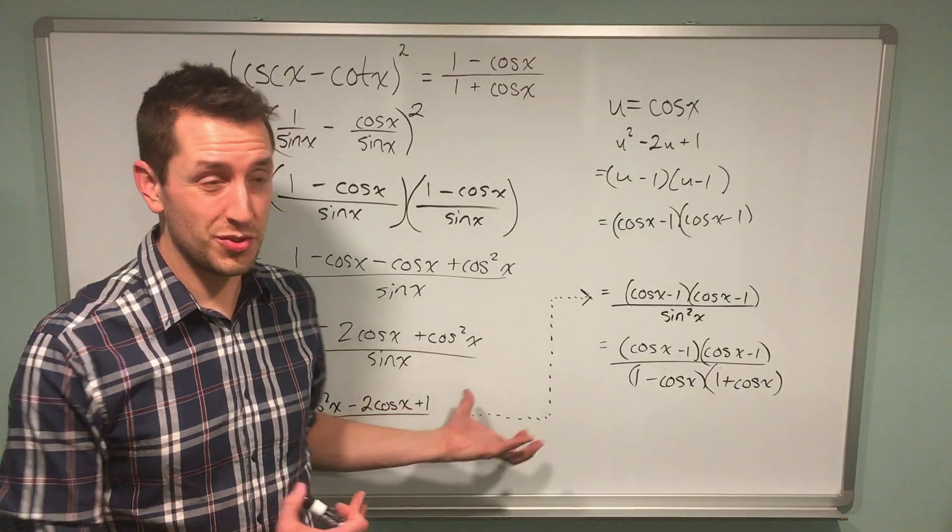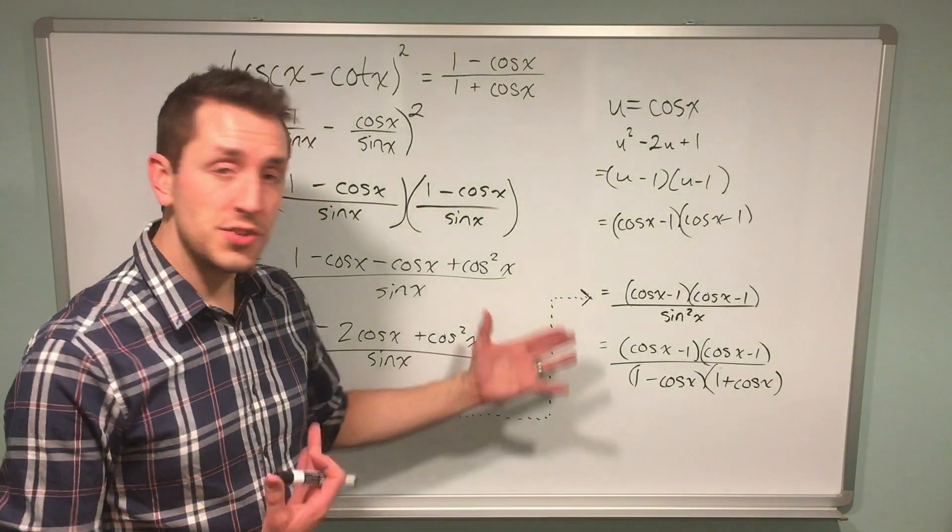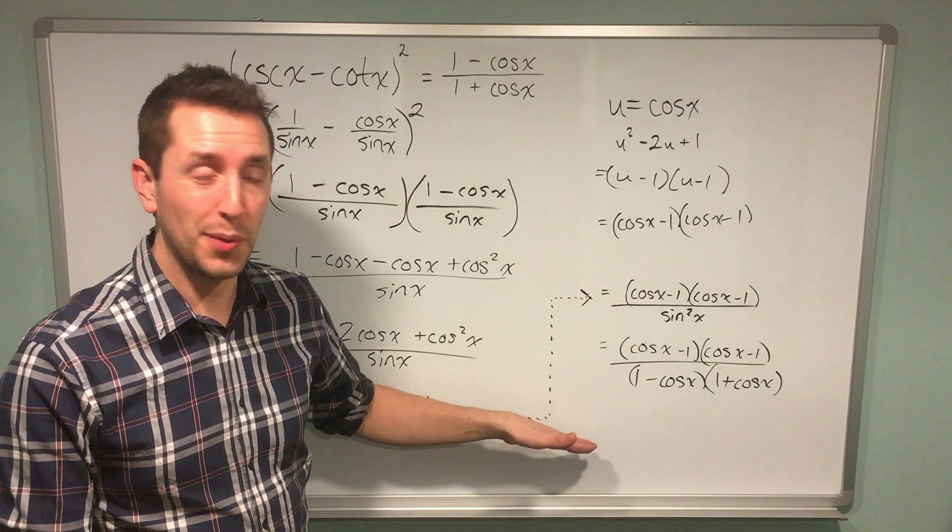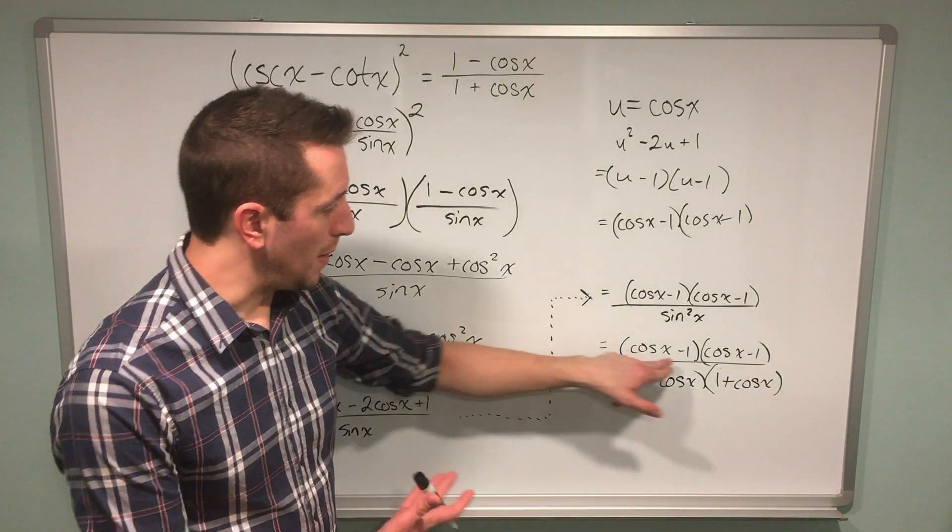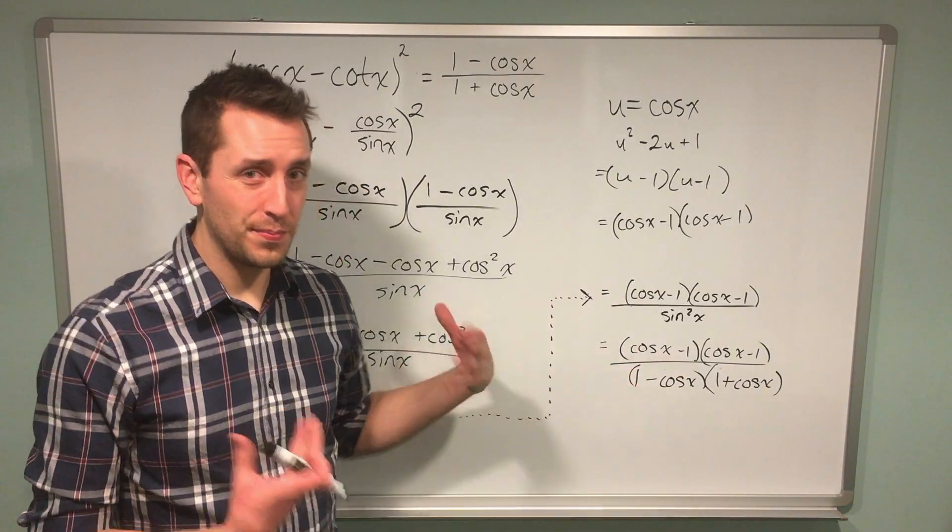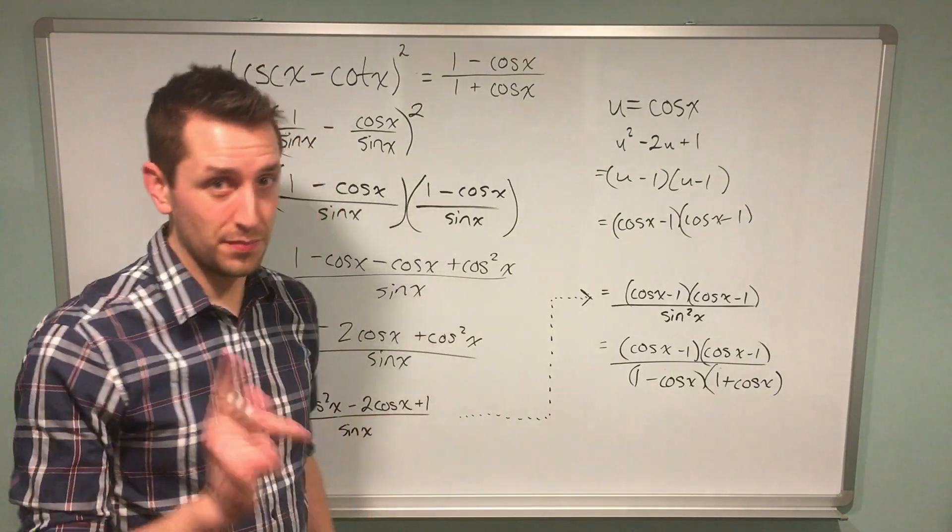Here's another step that makes this trig identity problem quite difficult. I mentioned you can't simply cancel the numerator and denominator. On top I have cos x minus 1, and on the bottom I have 1 minus cos x. Those are not equivalent expressions.